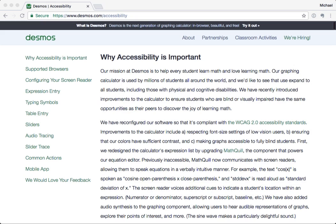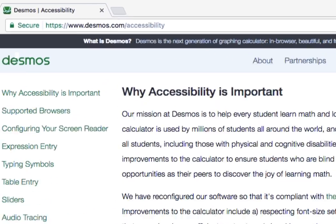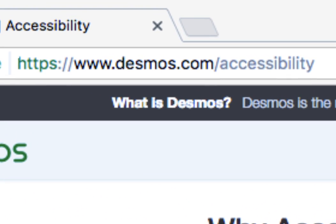To learn more about our accessibility features, including how to configure the screen reader on your own device, how to activate audio trace, and where to find a comprehensive list of keyboard shortcuts and commands, visit www.desmos.com/accessibility.